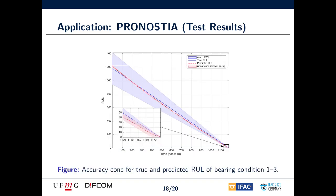In order to evaluate the prognostics algorithm through time, the alpha-lambda plot is used. The estimated remaining useful life is compared to its true value at each time step lambda until fault occurrence. The desired result is that the predicted remaining useful life fall within the region defined by a constant alpha, also known as the accuracy cone. The figure shows the successive computation of remaining useful life for bearing condition one, three, where the accuracy cone is computed for alpha equals to 20%. For each time instant in the x-axis, a prognostics routine is carried out to estimate the remaining useful life at this specific instant. It is important to note the predicted remaining useful life lies within the accuracy cone at all times.